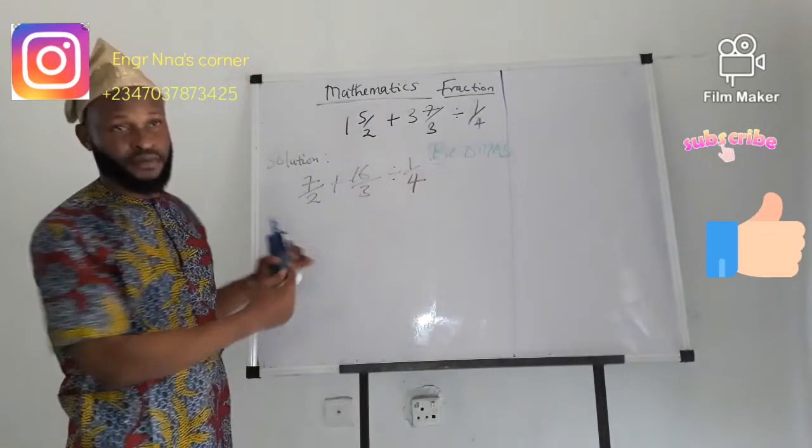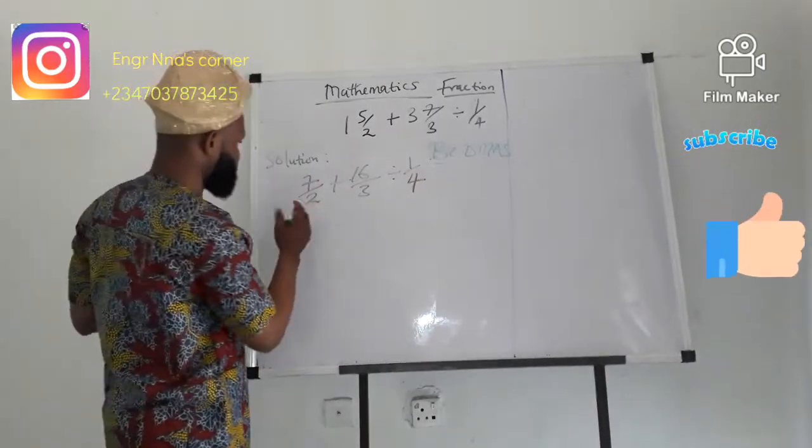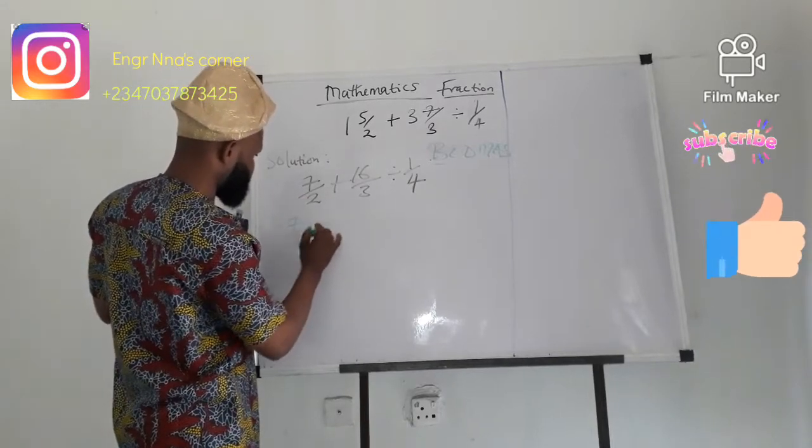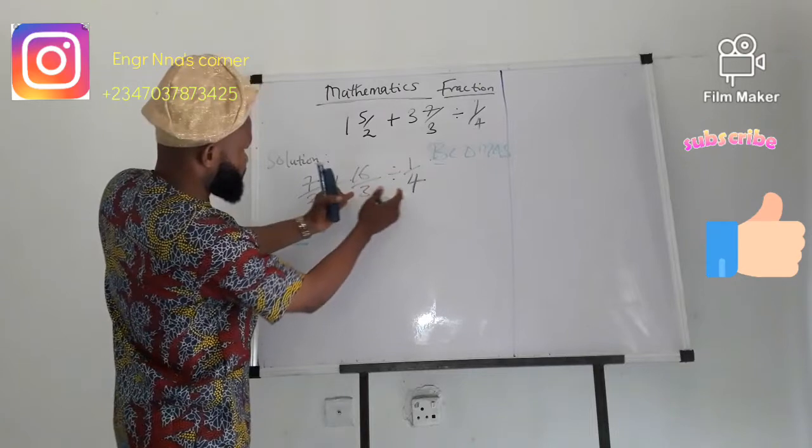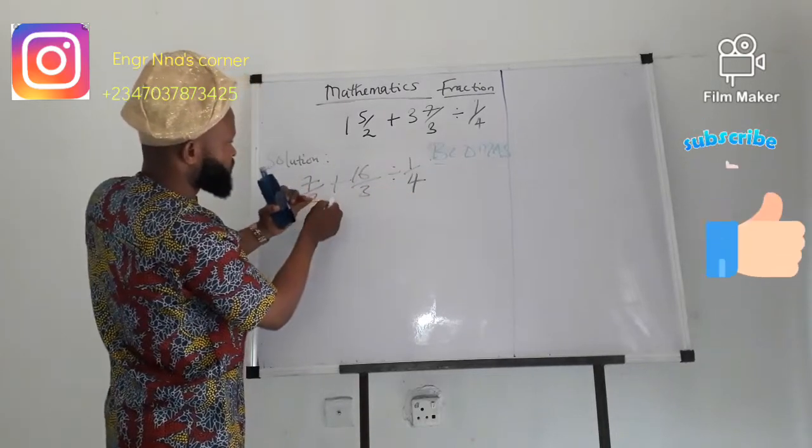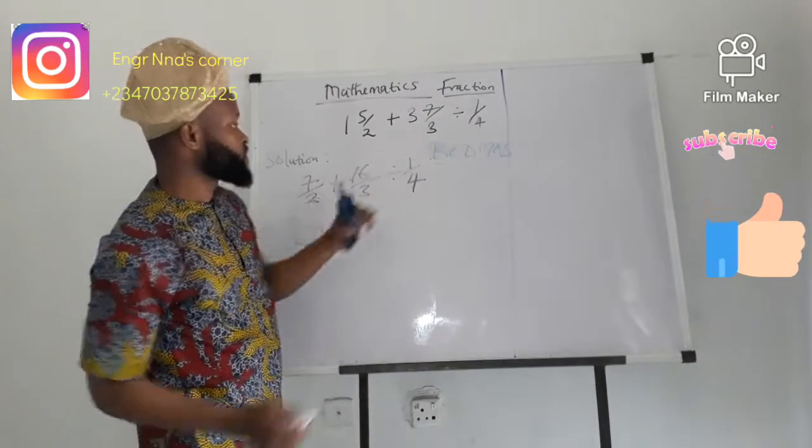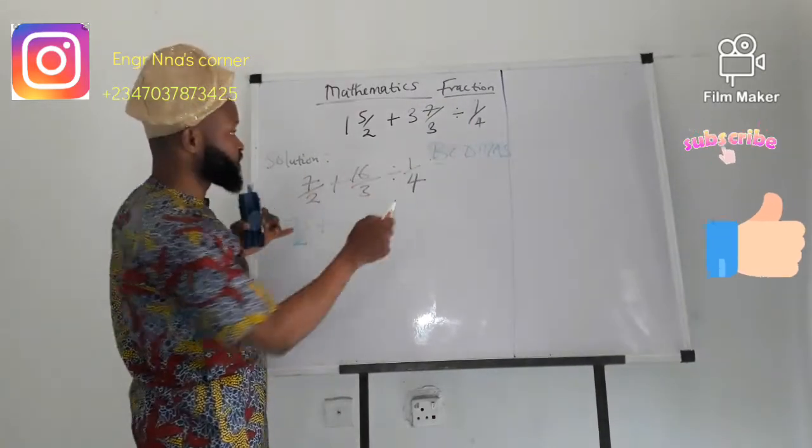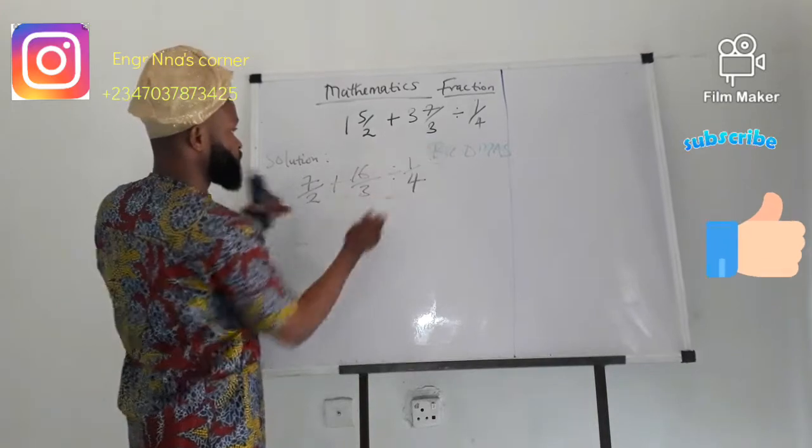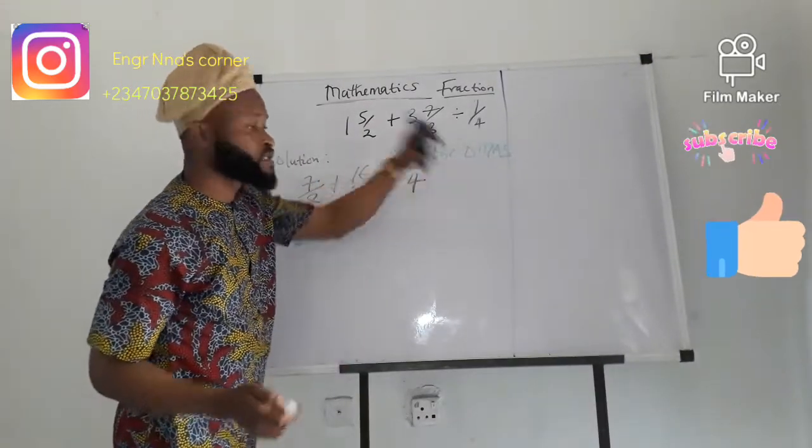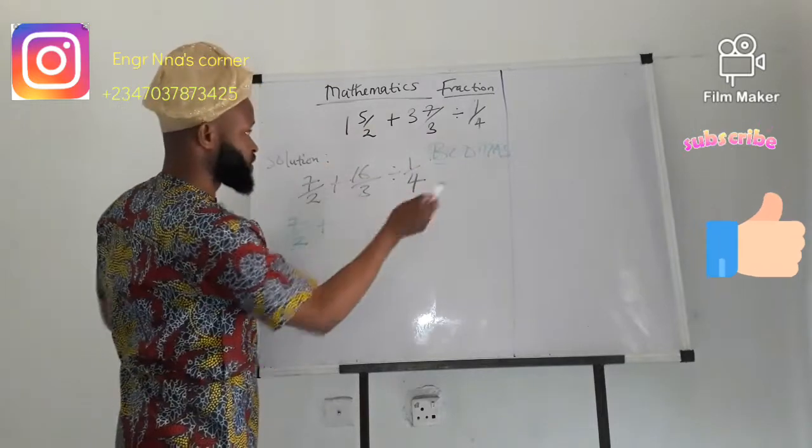We must follow this throughout the program of solving this. So, we come, we say 7 over 2 plus what goes here. Addition cannot go first. We said bracket of division. What comes next is division. What comes, the operation first, is division. We don't have a bracket. We don't have of. What we have is division.